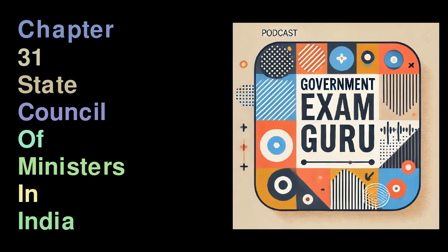Article 163 of the Constitution outlines how the governor works with ministers, specifically the Chief Minister, to help in their duties. This article states that there should be a Council of Ministers led by the Chief Minister, whose main job is to give advice to the governor when he or she carries out various functions. However, there are some special situations — called discretionary matters — where the governor can make decisions on their own without needing to consult the Council of Ministers. In case there is any disagreement about whether a specific issue is within the governor's discretion or not, the governor's decision is regarded as final, and whatever choice the governor makes cannot be questioned or disputed in court, as long as it falls under their discretionary powers.